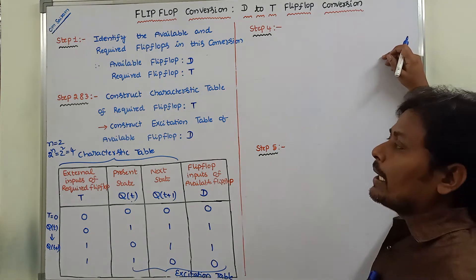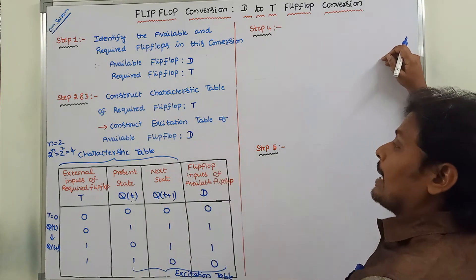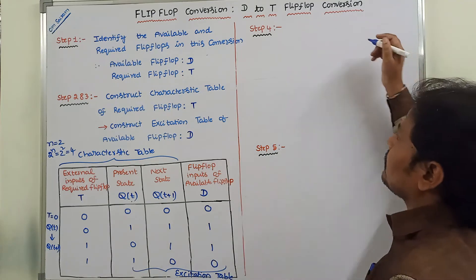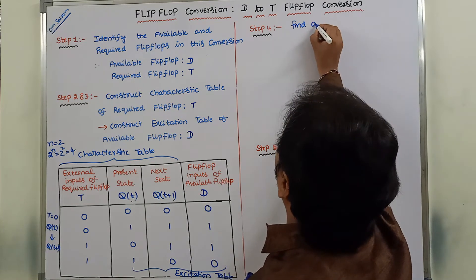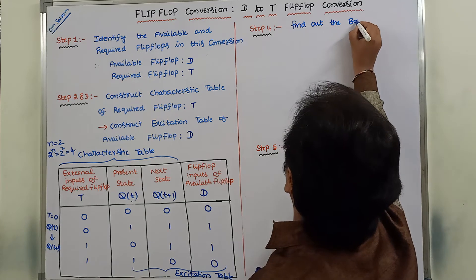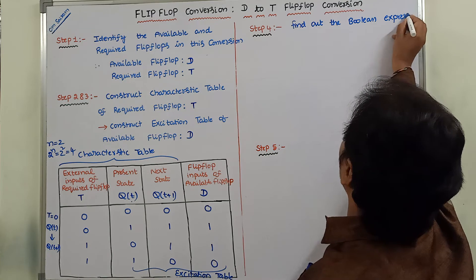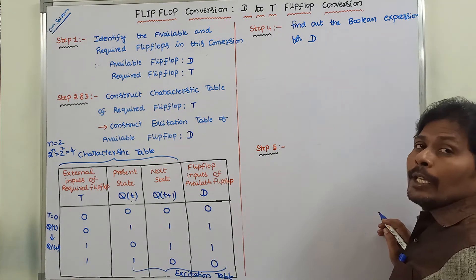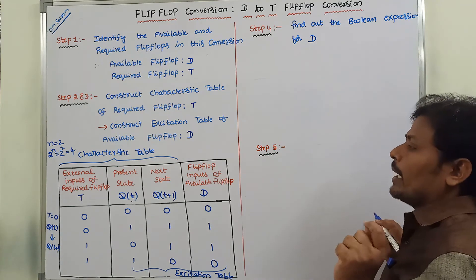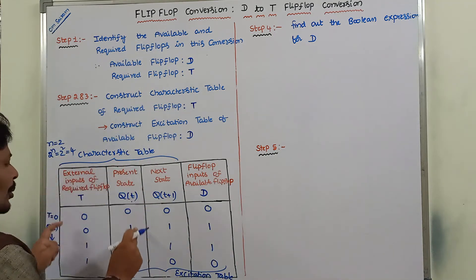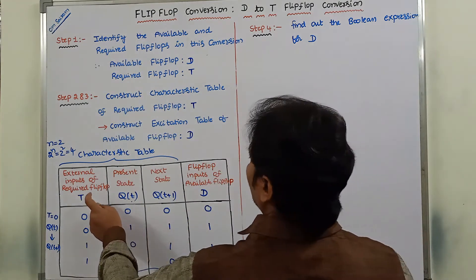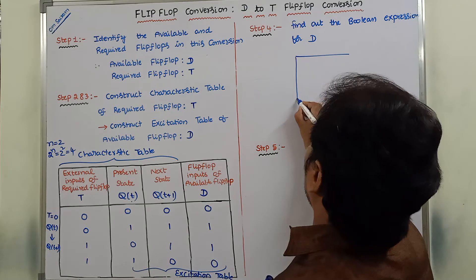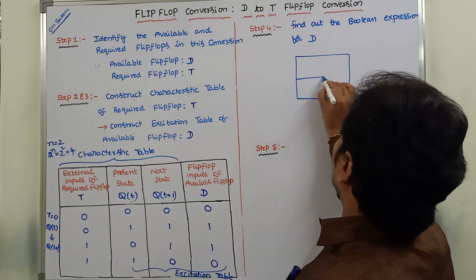Once we have constructed the characteristic table of the required flip-flop (T) and the excitation table of the available flip-flop (D), the fourth step is to find out the Boolean expression for D. To find out the Boolean expression for D using a Karnaugh map, since there are 2 input columns — T and Q(t) — we have to use a 2-variable Karnaugh map. So this is the 2-variable Karnaugh map with inputs T and Q(t).